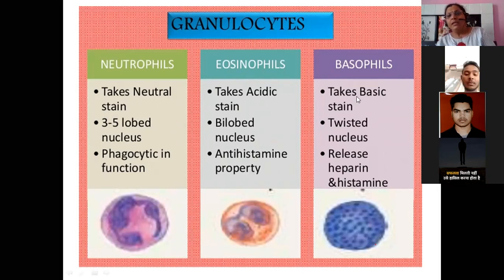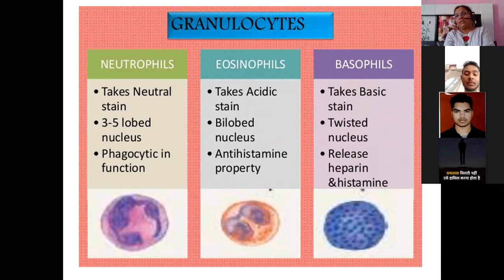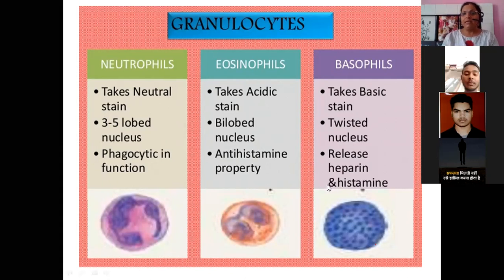Basophils take basic stains — that is why they are called basophils. They have a twisted, kidney-shaped bi-lobed nucleus. Basophils release heparin and histamine. Heparin is a natural anticoagulant in our body. If heparin is reduced, blood clotting may occur. So heparin acts as a natural anticoagulant to keep blood flowing.